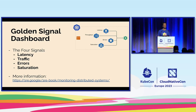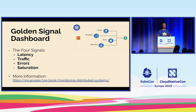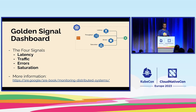The famous four golden signals that matter are latency, traffic or throughput, errors, and saturation. Let's look at what that actually means and why it's useful.